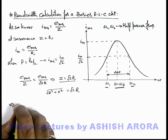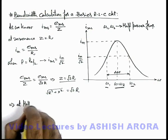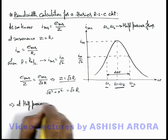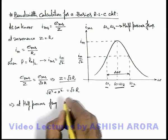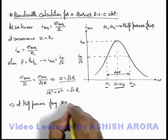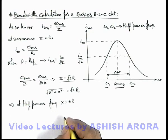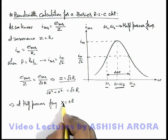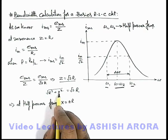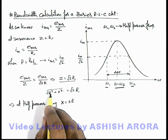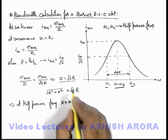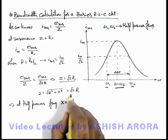This implies at half power frequencies, the value of X must be equal to either plus R or minus R. So depending on the value of X, the reactance when it is equal to plus R or minus R, we can see at two stages the value of Z becomes equal to root 2 R.